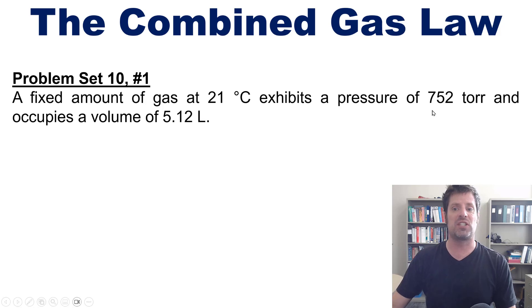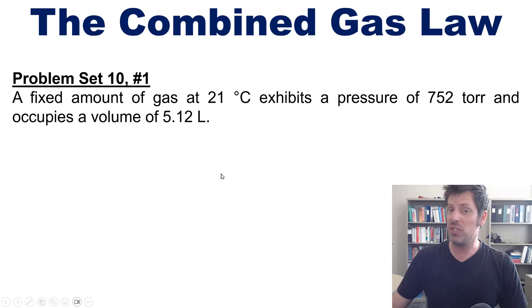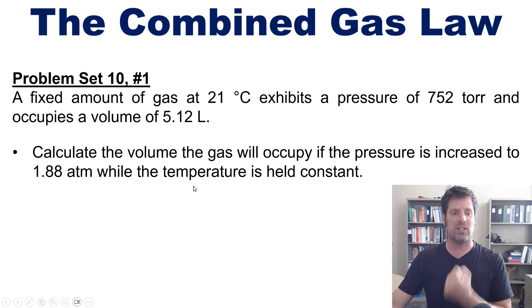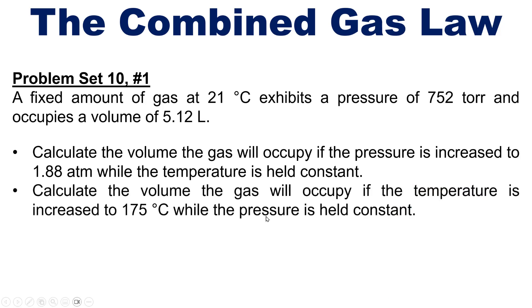This brings us to a problem to end this video. A fixed amount of gas at 21°C exhibits a pressure of 752 torr and occupies a volume of 5.12 liters. Using the combined gas law, calculate the new volume if the pressure is changed to 1.88 atmospheres while temperature is held constant, and separately, calculate the new volume if the temperature is increased to 175°C while pressure is held constant. I won't solve these here, but I will post a link in the description to a separate video. Until next time, please have an enjoyable rest of your day.